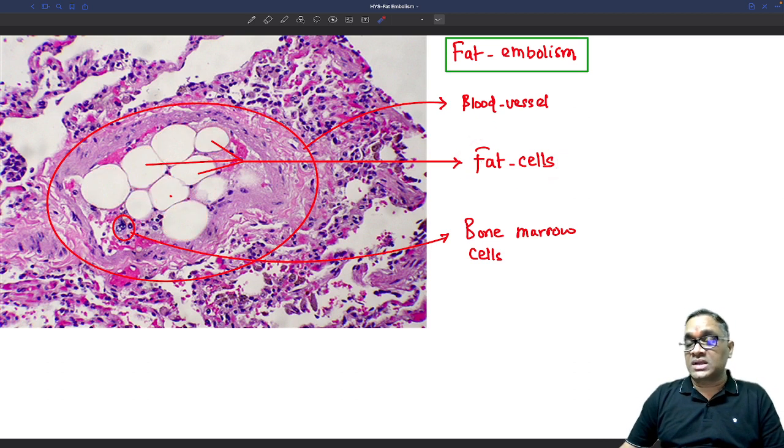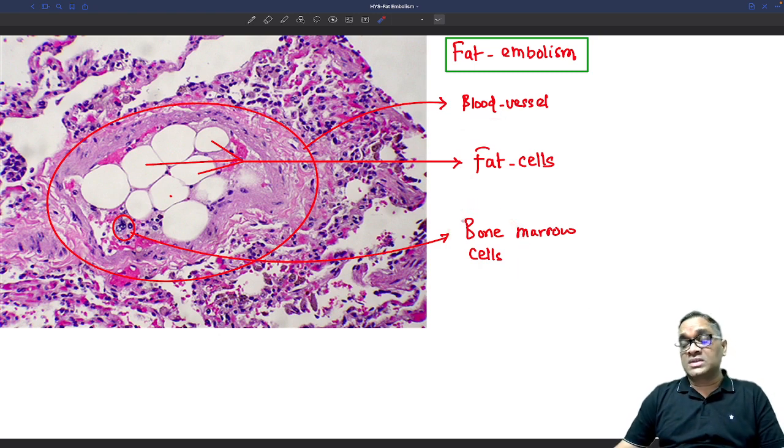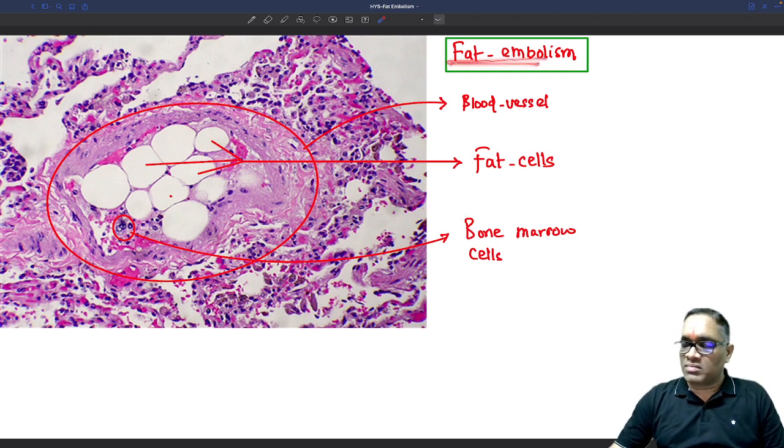How do we confirm these are fat cells coming from bone marrow? You may observe some bone marrow cells along with them. So fat cells within blood vessels, along with bone marrow cells and a history of fracture, injury or burns, will be suggestive of fat embolism.